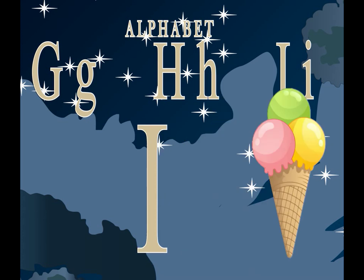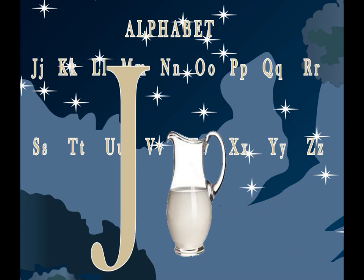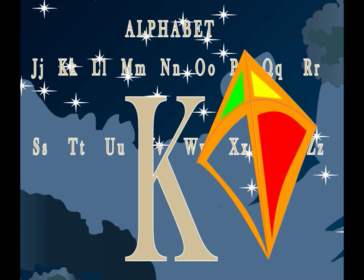I for ice cream. J for jug. K for kite. K for king.